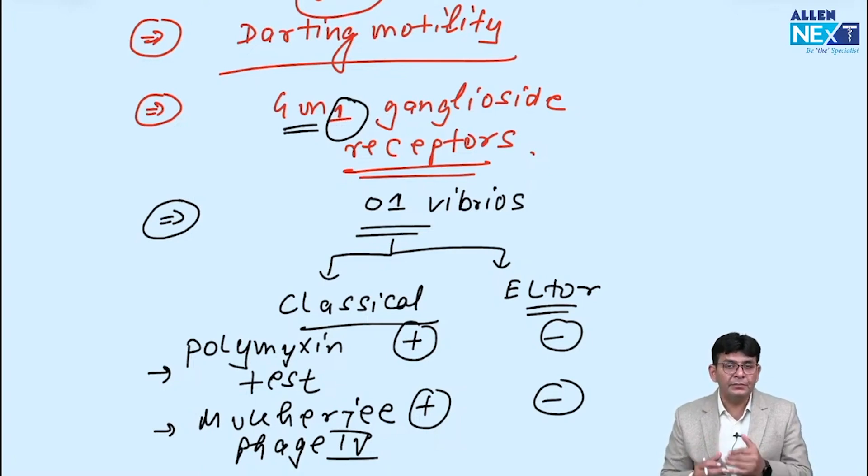And further, if you want to classify them, the sera, like seras are available. You can divide them into Ogawa, Inaba, Hikojima. That is classical Ogawa, classical Inaba, Hikojima. And the same is Eltor: Ogawa, Inaba, Hikojima. So that can also be done.